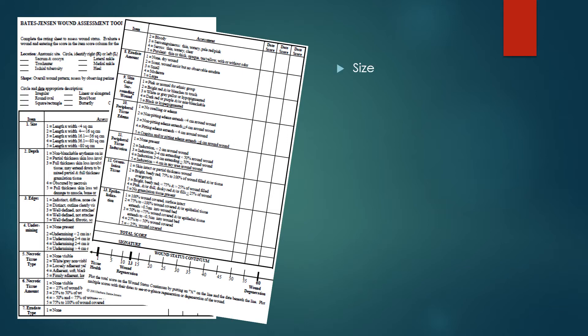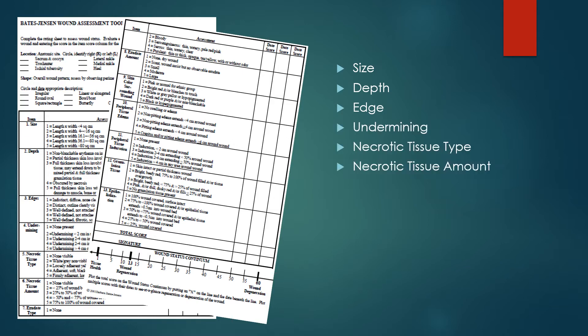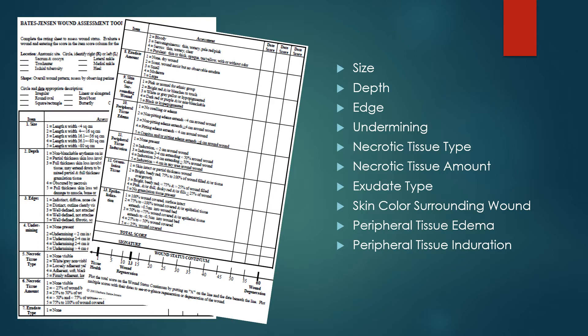The Bates Jensen tool covers: size of the wound, depth, edge description, undermining, necrotic tissue type and amount, exudate type, skin color surrounding the wound, peripheral tissue edema, peripheral tissue induration, granulation tissue, and epithelialization. This depth of assessment is not expected of an attending nurse carrying out wound care orders. However, being familiar with these terms and knowing what is normal or expected for a wound is important. It really helps to have a consistent person performing wound care, as every wound is different and familiarity matters. Alternatively, study wound care progress notes and view any pictures of the wound prior to wound care to compare and monitor the progress of healing.